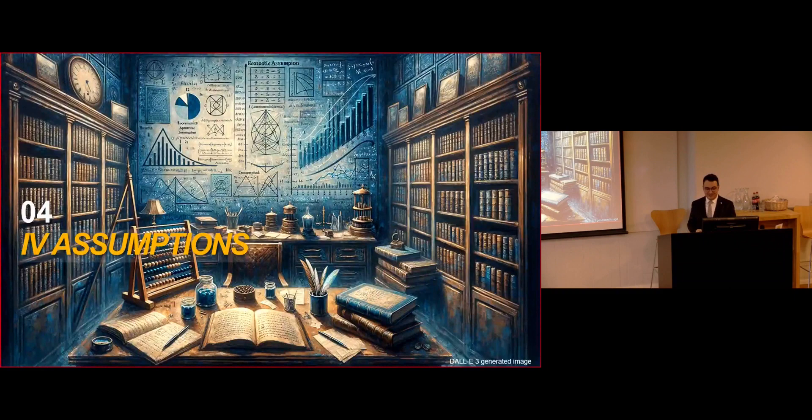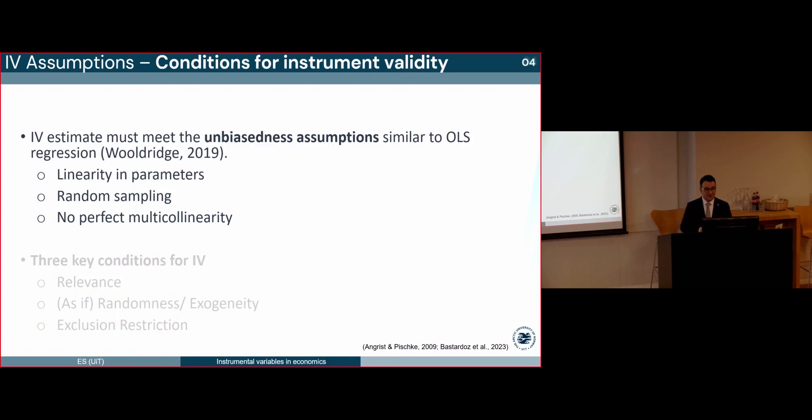Now, what are the IV assumptions? I will present conditions for instrument validity as outlined by Angrist and Pischke in 2009 and Bastardot et al. in 2023. Just like OLS regression, IV estimates require certain unbiased assumptions. These are linearity in parameters, random sampling, and no perfect multicollinearity. Moving on, there are three cardinal conditions for an instrument to be considered valid. These conditions are relevance, as if randomness or exogeneity, and exclusion restriction. I will explain them in the upcoming slide.